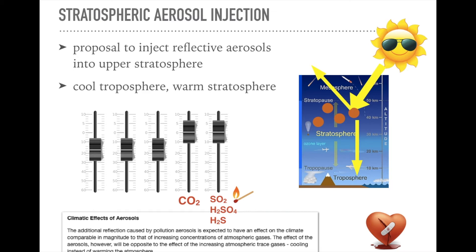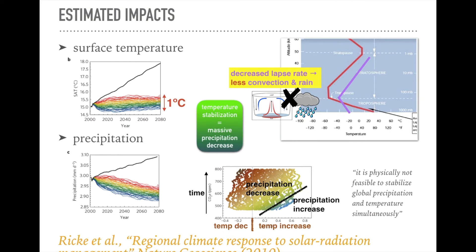This is NASA's reporting on it as of 2017. They speak of it in future tense: the effect of the aerosols will be the opposite to increasing atmospheric trace gases like CO2 — cooling instead of warming the atmosphere. But the most recent version I found on the NASA website said they don't know what the results of stratospheric aerosol injection will be. So what does the academic record show? There's one paper that uses one of the best world climate models to estimate what the effects would be.